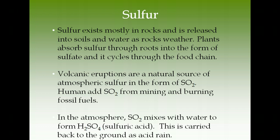The last cycle is the sulfur cycle. Sulfur exists mostly in rocks and, like phosphorus, is released into soils and water as rocks weather. Plants absorb sulfur through roots in the form of sulfate (SO₄), and it cycles through the food chain. There is a gaseous component: sulfur dioxide (SO₂) is released from volcanic eruptions and from burning fossil fuels — coal especially is the dirtiest fossil fuel to burn, and even the mining process releases SO₂.